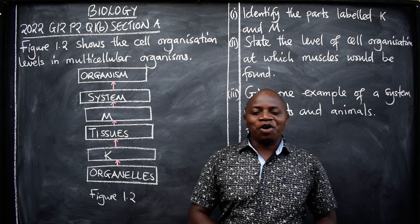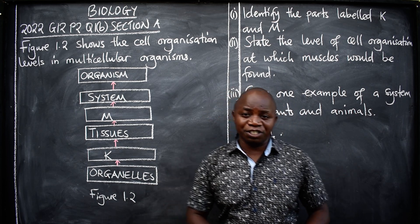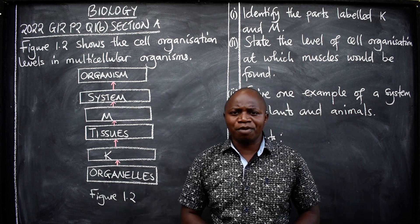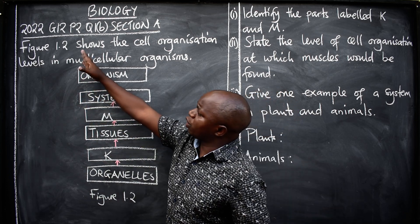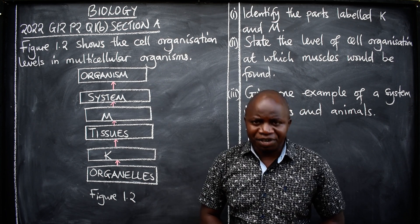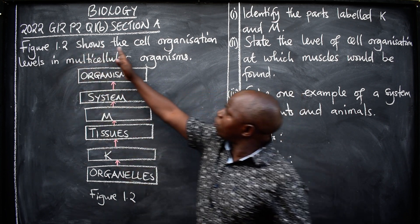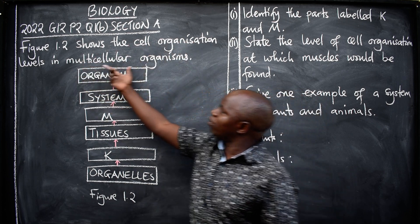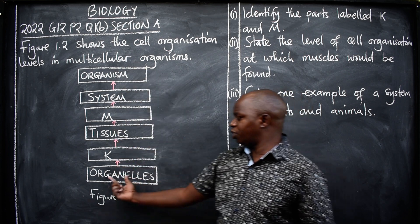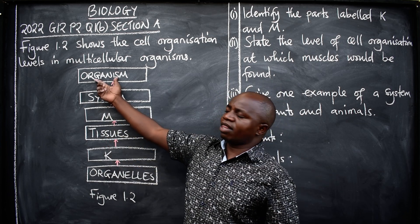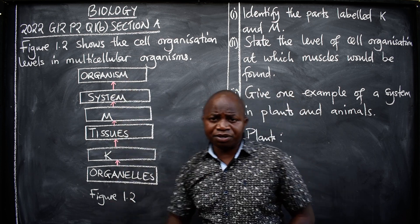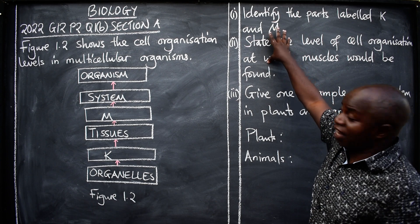Hello ladies and gentlemen, hope you are well. This is Biology, and in this presentation we want to look at this question coming from the 2022 Grade 12 Paper 2, Question 1B, Section A. The question reads: Figure 1.2 shows the cell organization levels in multicellular organisms. We have levels here — organelles, K, tissues, M, system, then organism, as indicated by the arrows.